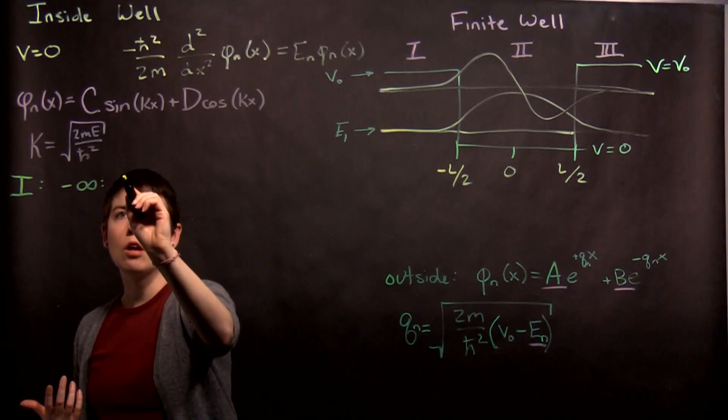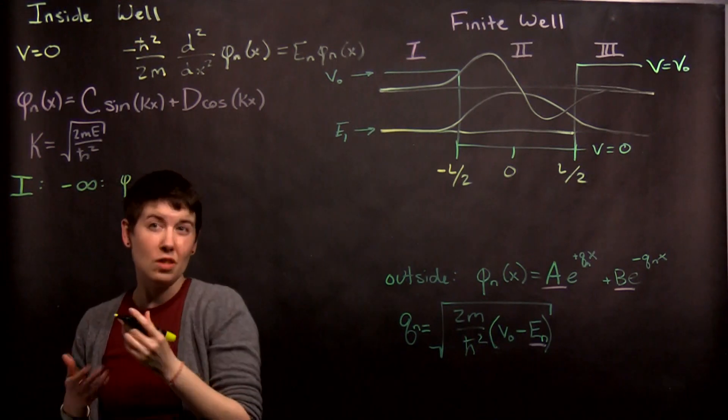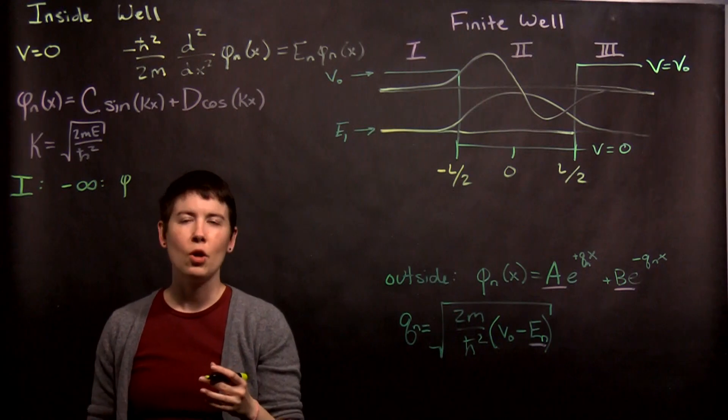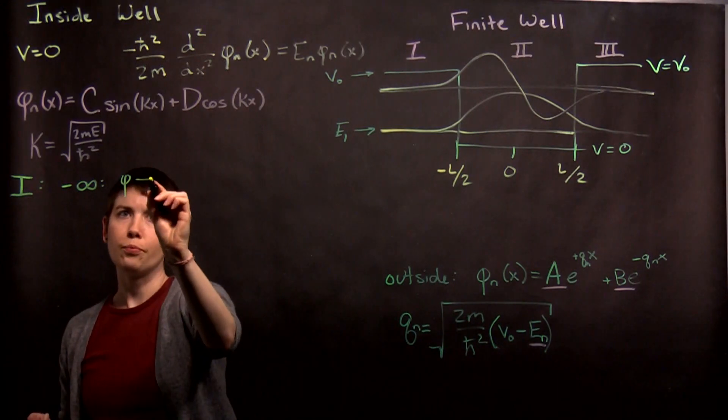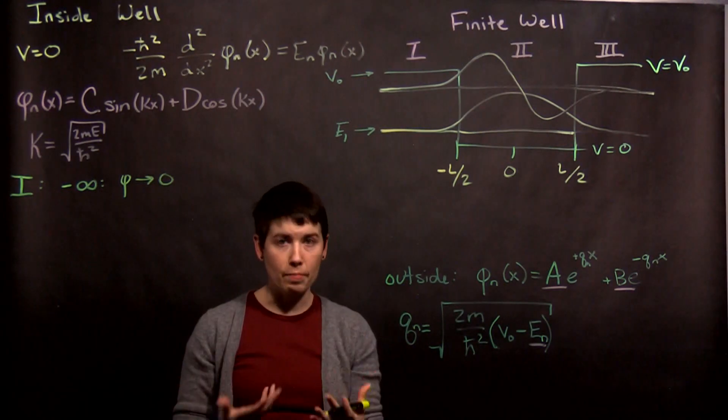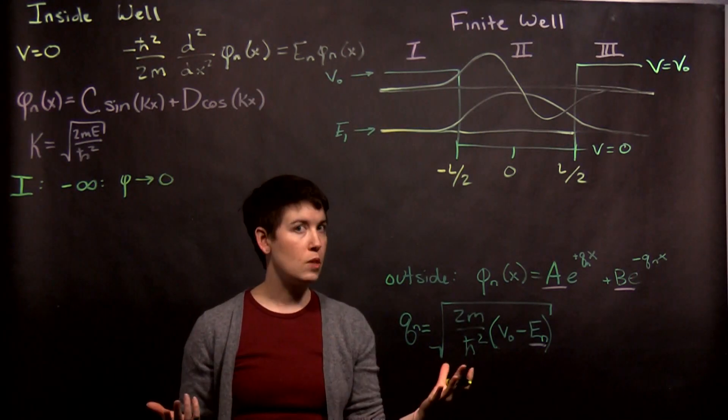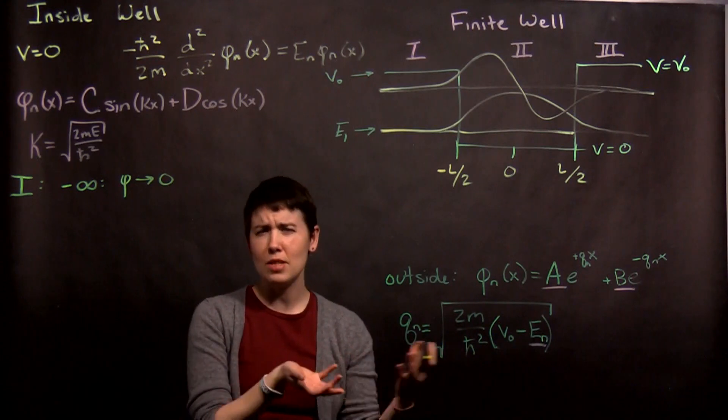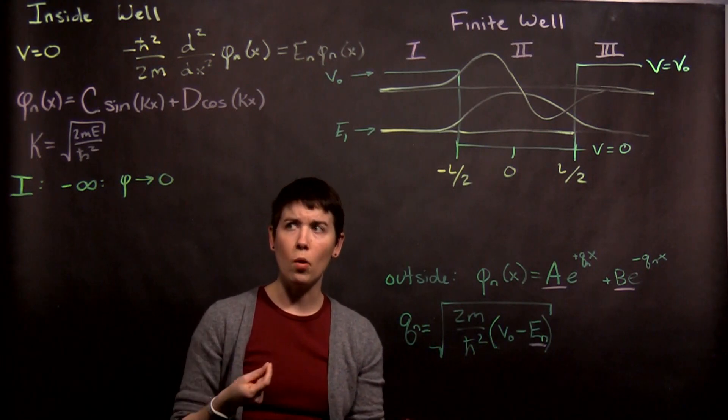And the idea here is that our eigenstates are, well in general, any of our wave functions should be normalizable. And so what that means is if we integrate that wave function, magnitude squared, over all the space, it has to be equal to 1. We have to find our particle somewhere.